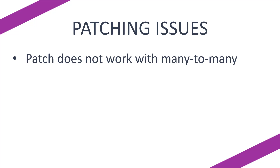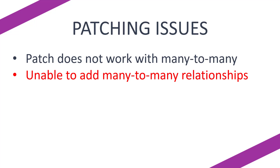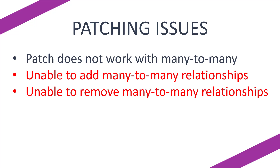Essentially you start with one table, you have another table, and you have a many-to-many relationship between them. There is a connecting table where that relationship is stored. So you're unable to add many-to-many relationships, but you're also unable to remove many-to-many relationships with patching. So how do we patch our data to do this?